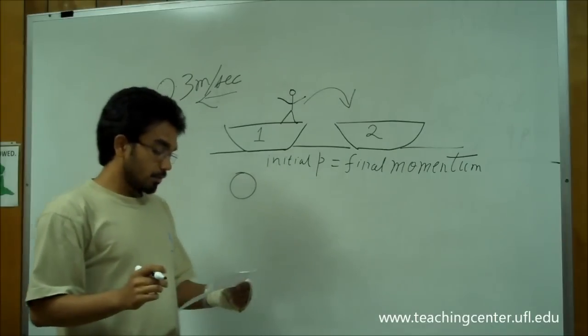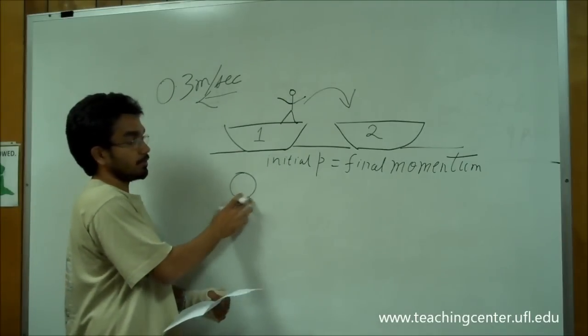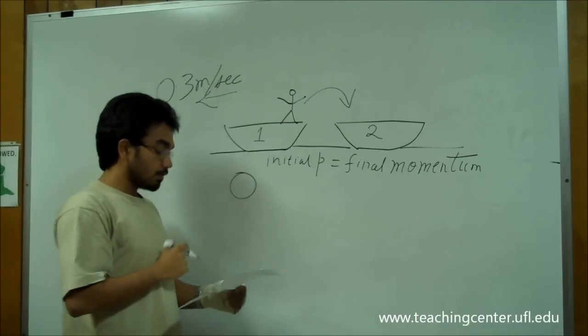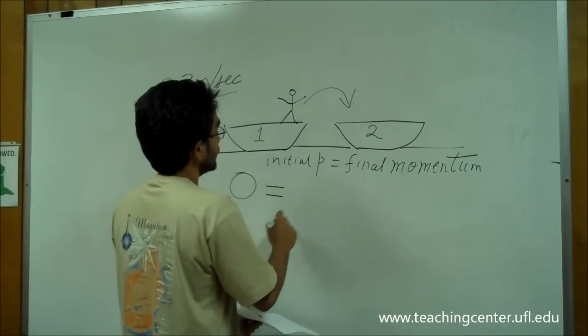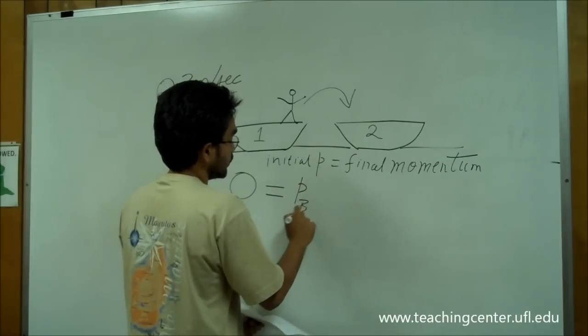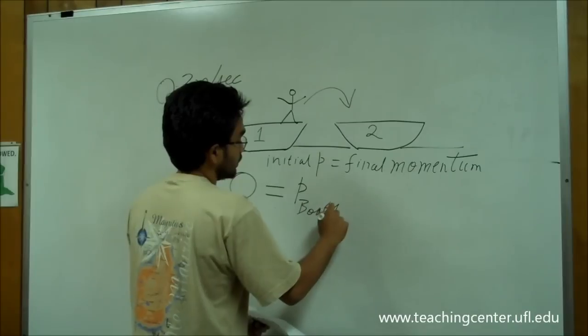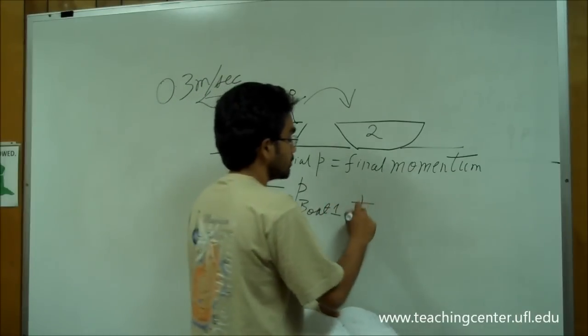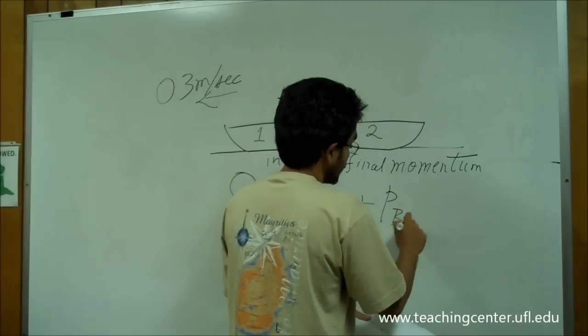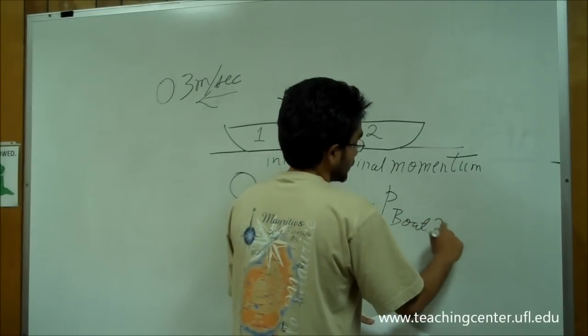The final momentum of the system, before the person has jumped, is 0. So, the final momentum can be written as, momentum of boat 1 system, plus momentum of boat 2 system.